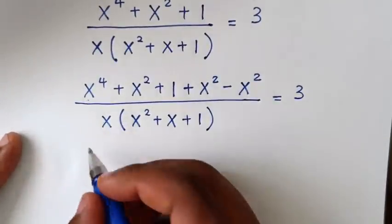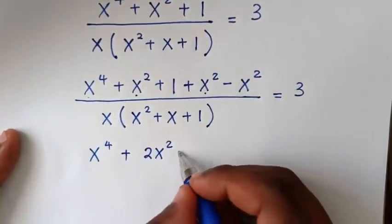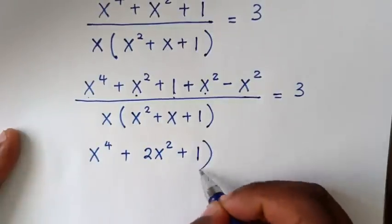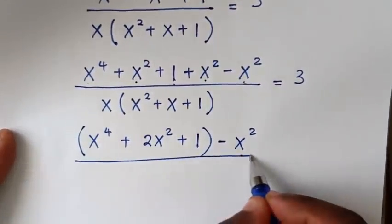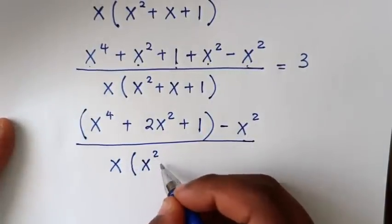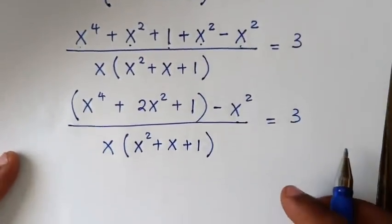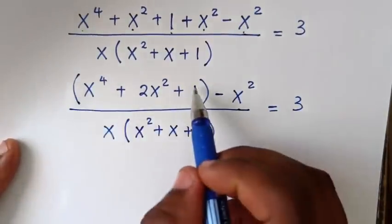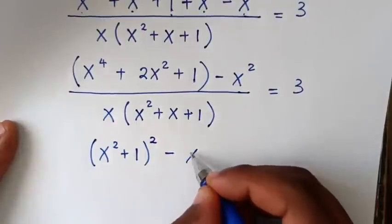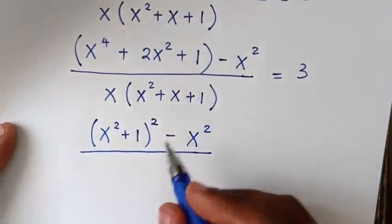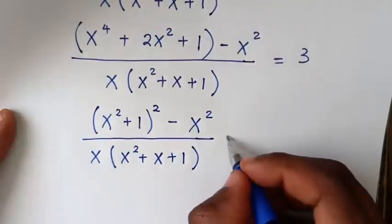This gives us x⁴ + 2x² + 1 minus x², over the denominator x(x² + x + 1), equal to 3. The expression x⁴ + 2x² + 1 is the expansion of (x² + 1)², so the numerator becomes (x² + 1)² minus x².